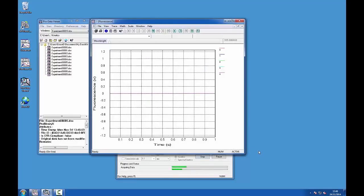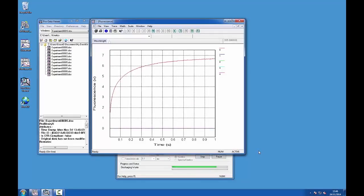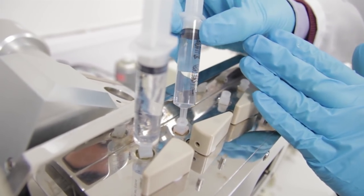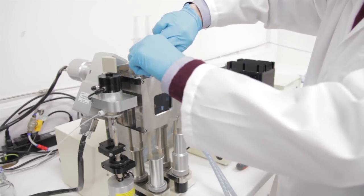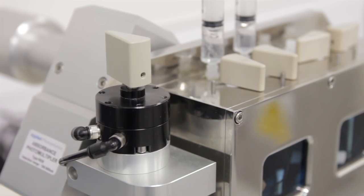Once you have completed your experiments, flush the system through with distilled water by filling the syringes, setting the drive valves to the drive position, and clicking drive several times. The system can then be left indefinitely with distilled water in the flow circuitry.